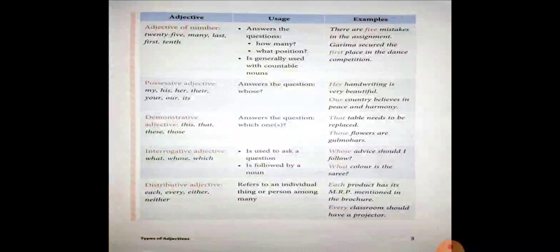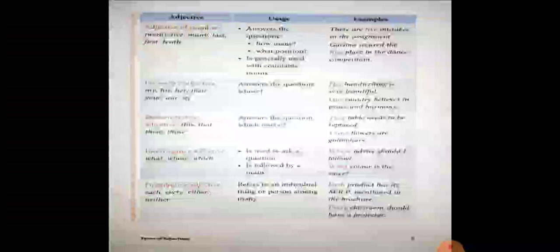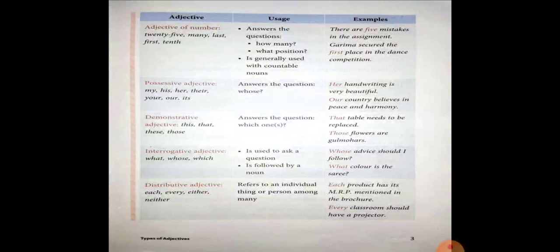Come to the next one: Interrogative Adjective. As it is clear from the name, interrogative means to ask or to query. Interrogative adjective is used to ask a question and is followed by a noun. The wh-words — what, whose, which — describe interrogative adjectives. For example: whose advice should I follow? Here advice is a noun, and before it the adjective whose is used. Second example: what color is the sari? Here color is the noun, and it is followed by the adjective what.